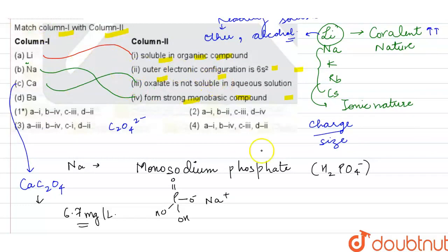Last, barium. If you look at the options for barium, what is the outer electronic configuration? 6s2. The atomic number of barium is 56, which is xenon 54 plus 6s2. So A is first, B is fourth, C is third, and D is second.